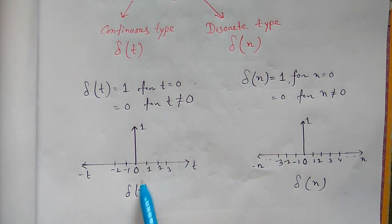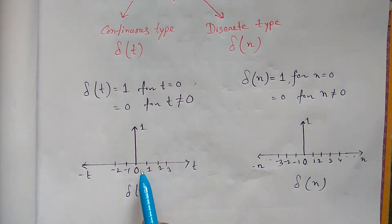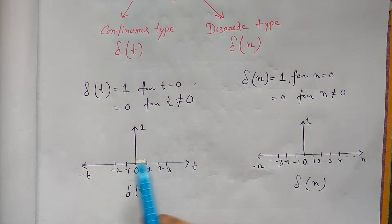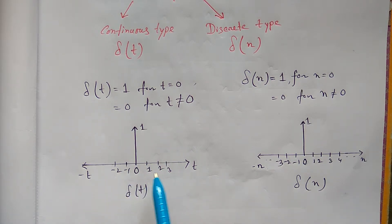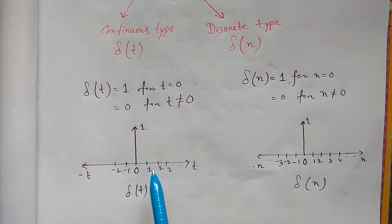Here is the graphical representation: at t equal to 0 the value is 1, and for other values of t except t equal to 0, the value is 0.